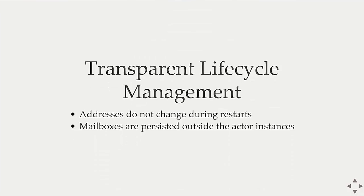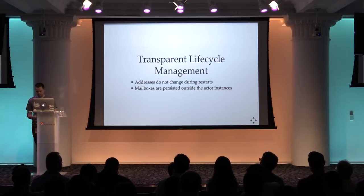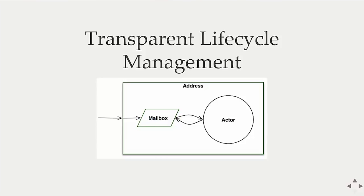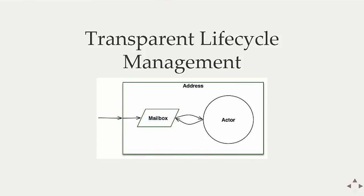Supervision, combined with addresses, gives us transparent lifecycle management. Addresses don't change during restarts — just as restarting your web server doesn't change its DNS. Mailboxes are persistent outside of actor instances. The address encapsulates the mailbox and the actor — messages flow through the address into the mailbox, and the actor processes them. If an actor instance has an issue, the supervisor can replace it with a whole new actor instance and shove it in transparently. To the outside world this is invisible because you're sending messages into the mailbox, which is still there, and the actor could be replaced without anyone knowing.